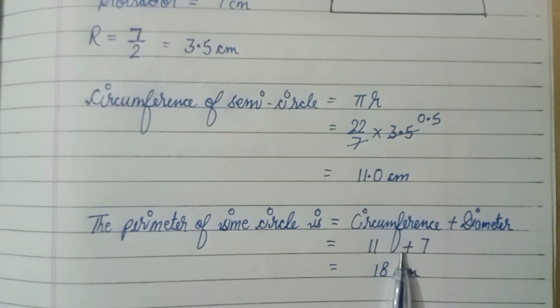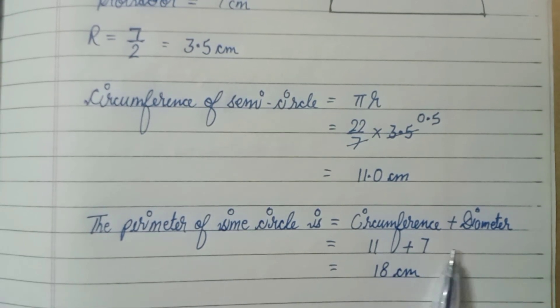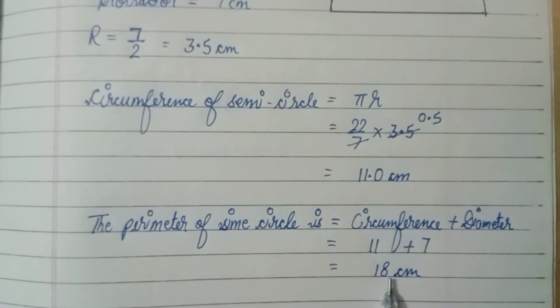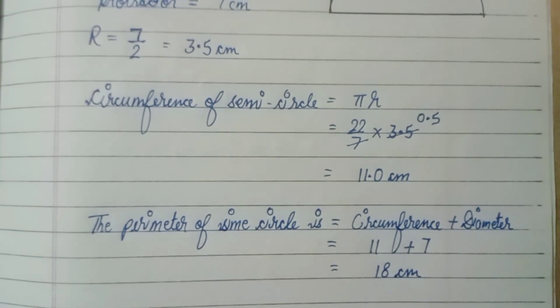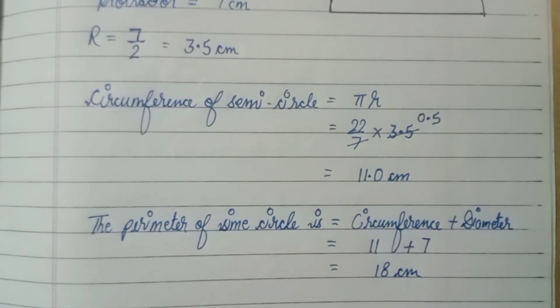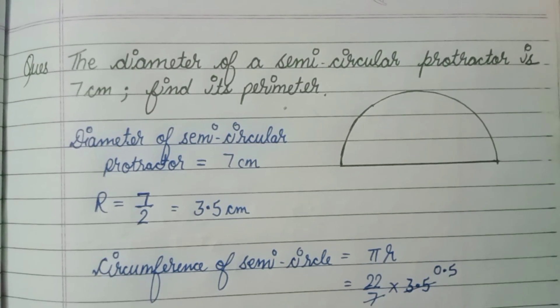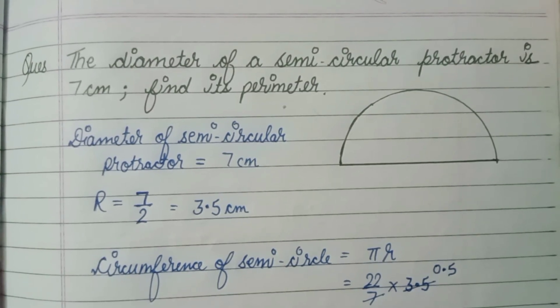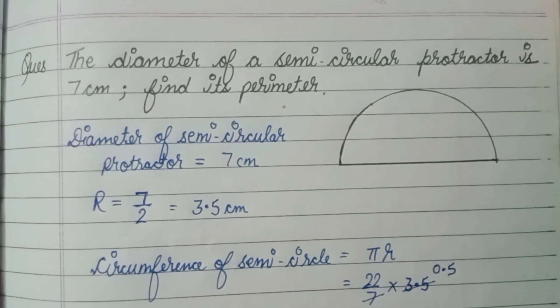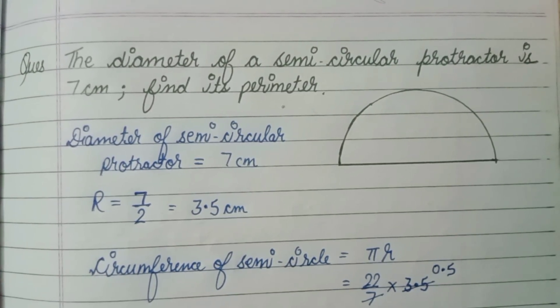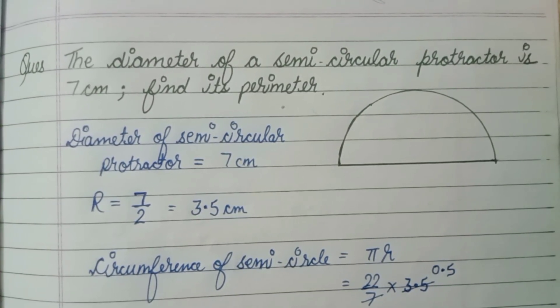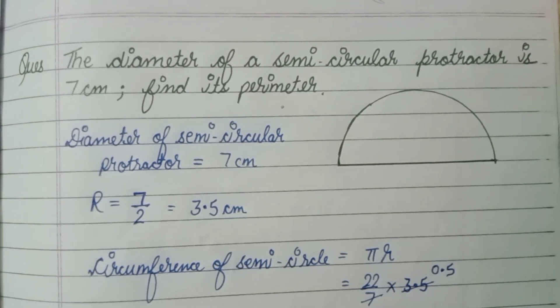So we have 11 plus 7 equals 18 cm, and this is our answer. If you like this video, please like and share, and if you are new to my channel, please subscribe. Thanks for watching, bye bye!